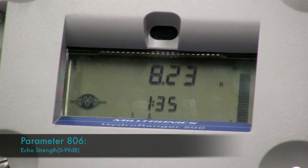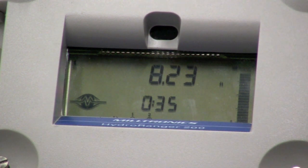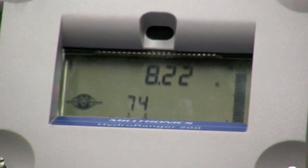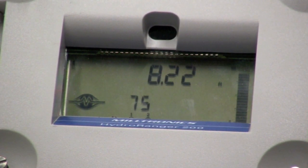Parameter 806 displays echo noise in dB. Again, the stronger the signal the better.